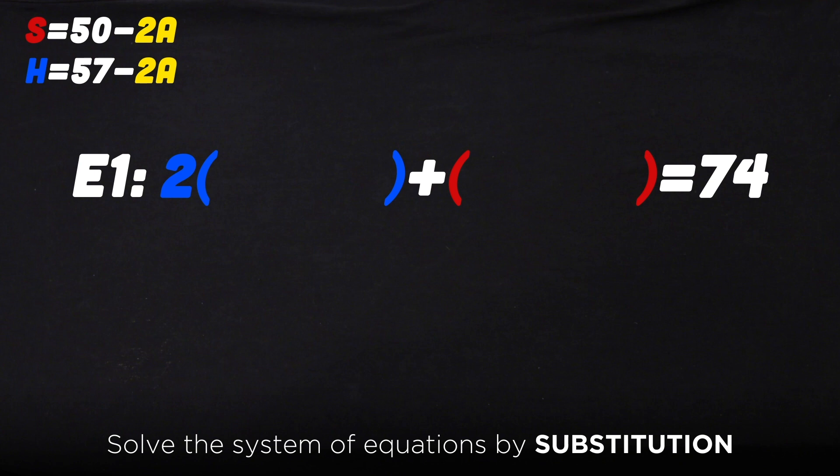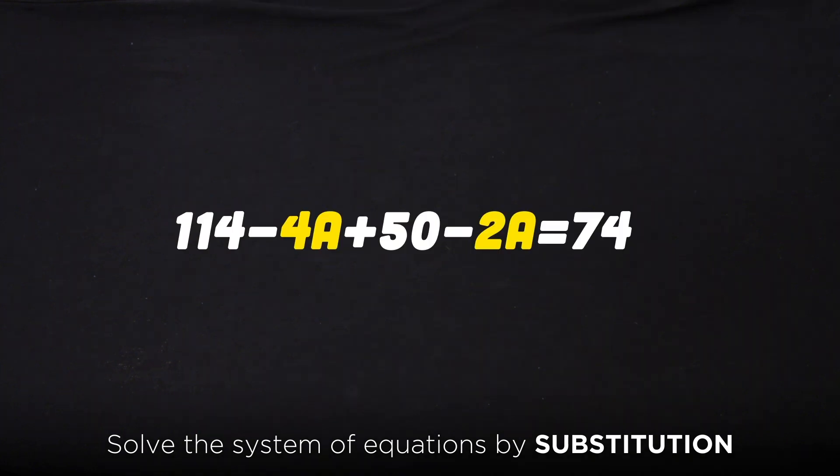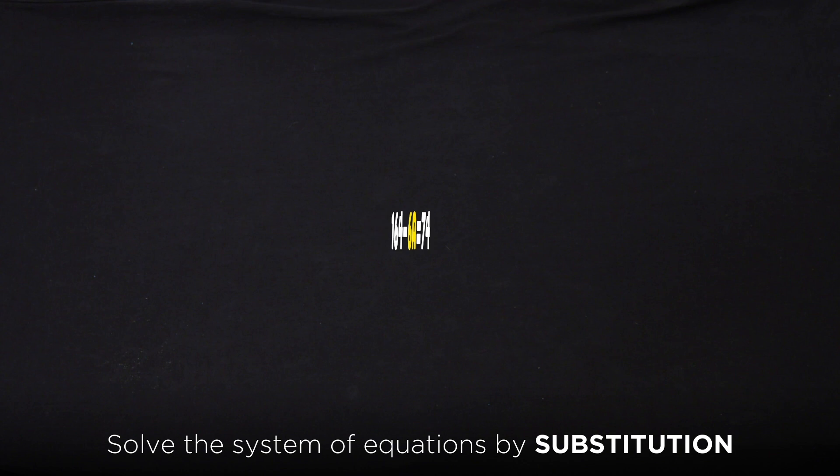You plug in the value of H and S and get 2 times (57 - 2A) plus (50 - 2A) equals 74. After distributing and combining like terms, you get 114 - 4A + 50 - 2A = 74. You combine like terms and now 164 - 6A = 74.